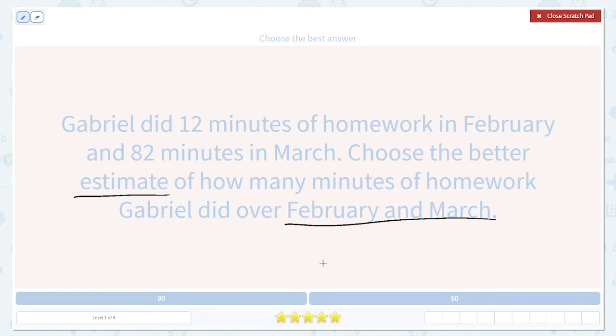So how are we going to find? Let's start with the regular total. 82 minutes in March, 12 minutes in February. That would be our total.